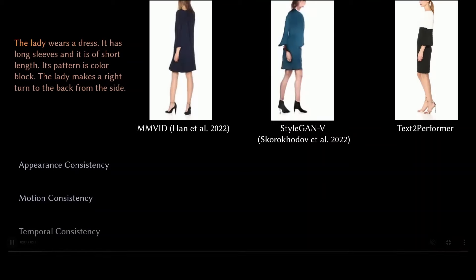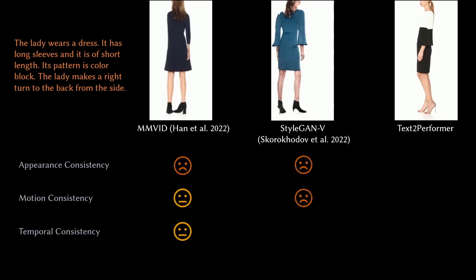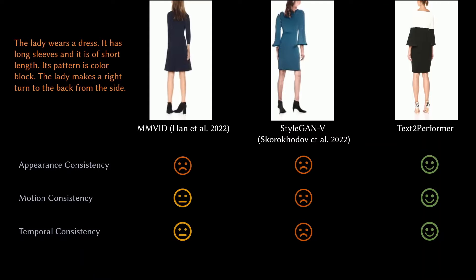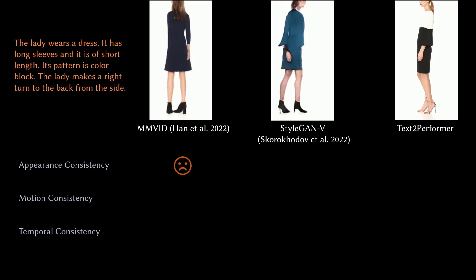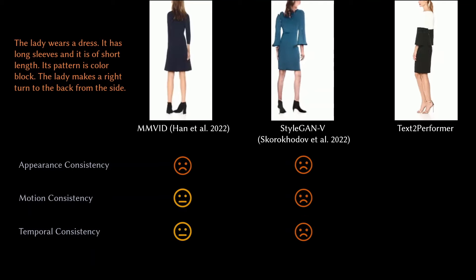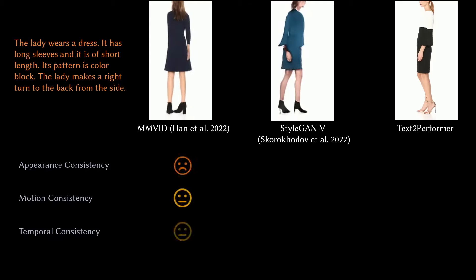In this next comparison, the lady wears a dress with long sleeves of short length, with a color block pattern, and she makes a right turn to the back from the side. MM-WIT is slightly okay on a few tasks like consistency and temporal consistency, whereas StyleGAN-V is not good enough, and Text2Performer has performed quite well.